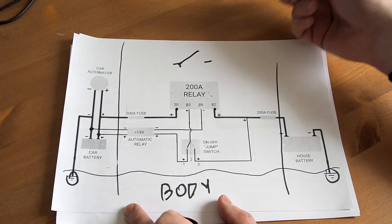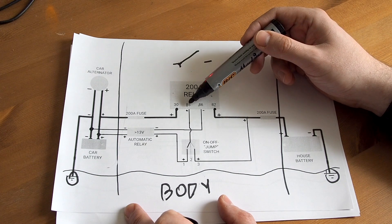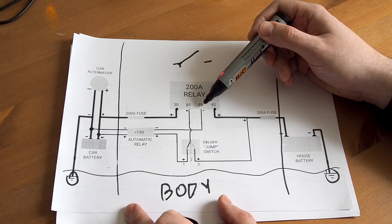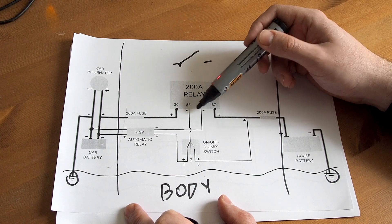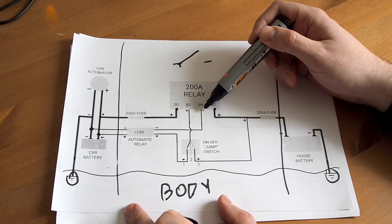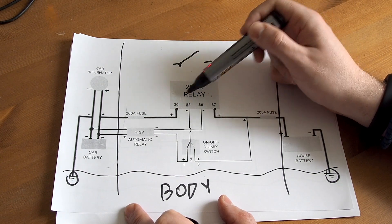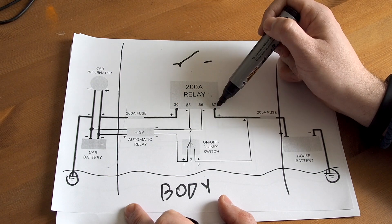So how to make it close? For this purpose it has two additional connections, which is 85 and 86. And when you set the 12 volt power to these connections, the relay closes and makes power go through it between these connections.